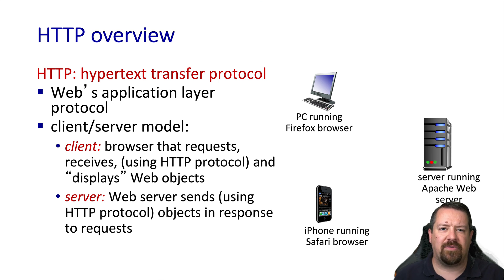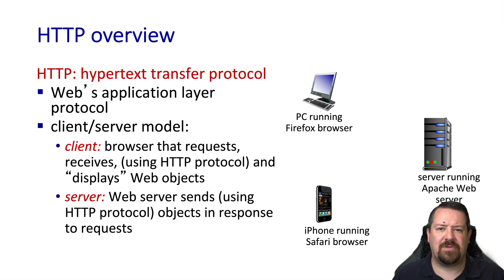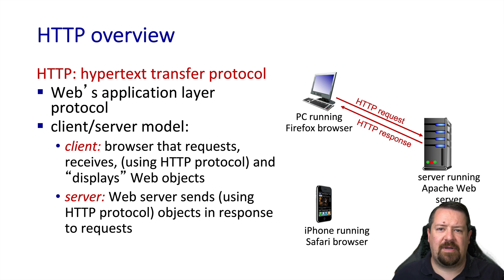The client is the browser application that requests the web page — the interface you're used to dealing with, such as Chrome, Firefox, Internet Explorer, Edge, and so on. The server is the application running on the other end of the connection and delivering the web pages. Some examples of servers are Apache, NGINX, or IIS. Both the client and the server must speak HTTP in order to understand each other. The basic HTTP interaction is quite simple, consisting of a request and a response.